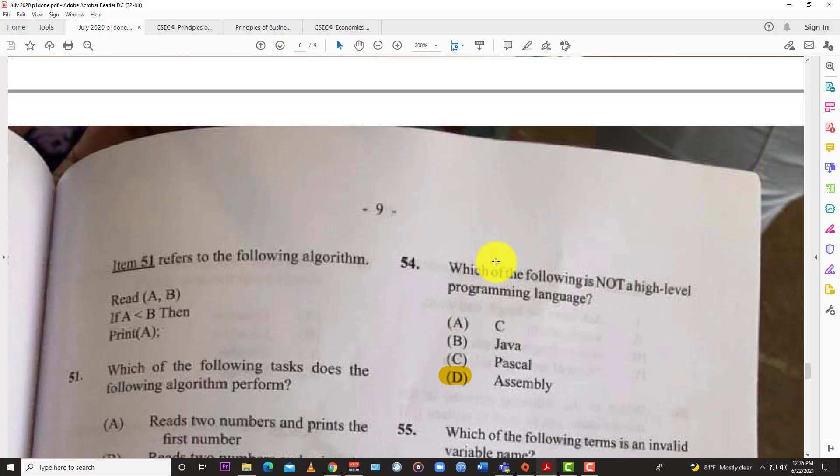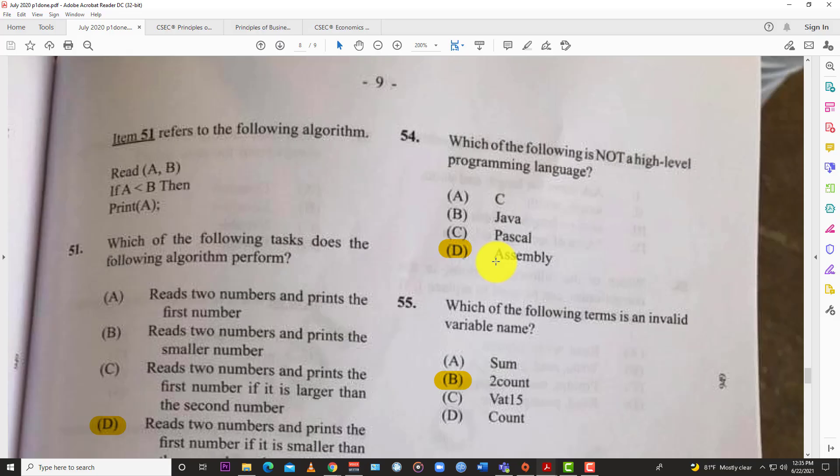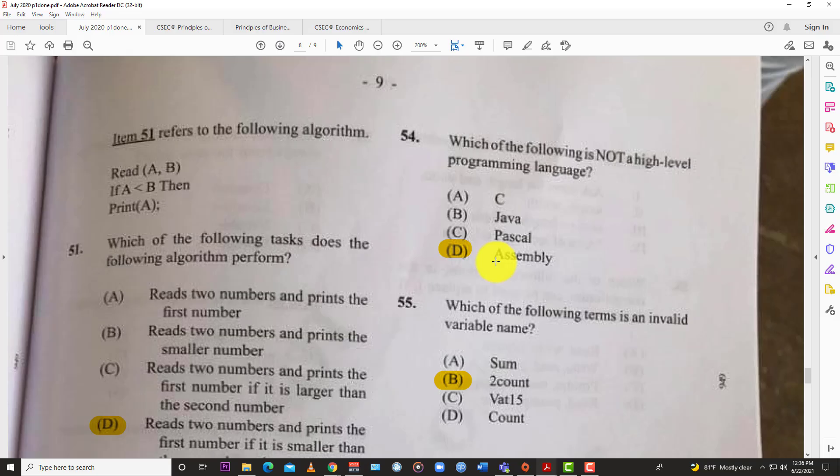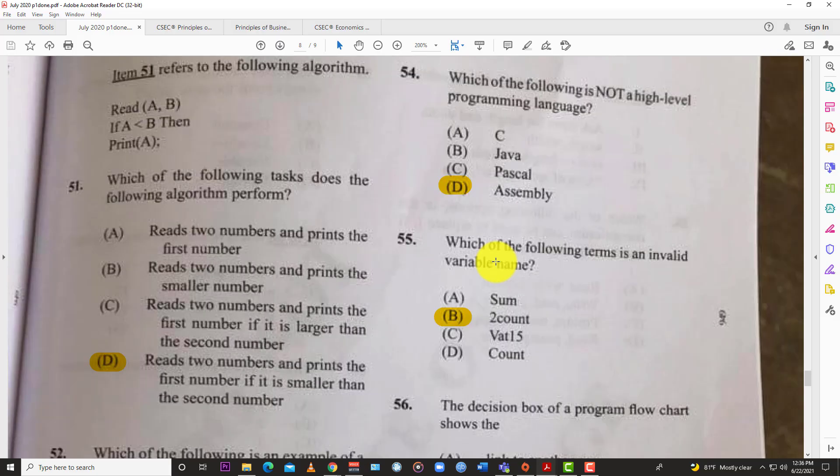Question 51: Refer to the following algorithm. Read A, B. If A is less than B, then print A. Which task does the following algorithm perform? The answer here is: read two numbers and print the first number if it is smaller than the second number. That's obviously written out there.